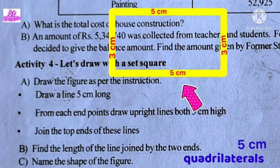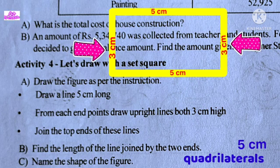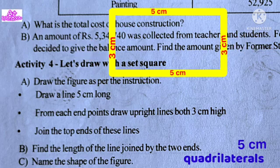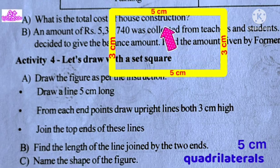From each end of the points, draw upright lines both 3cm long. Draw 3cm upright lines from each end and join the top ends of these lines.